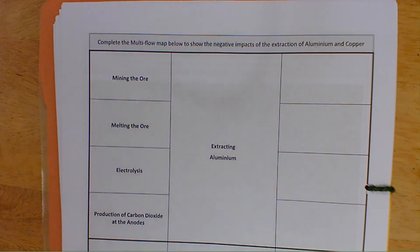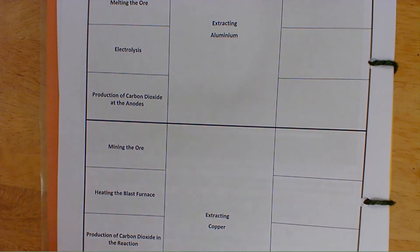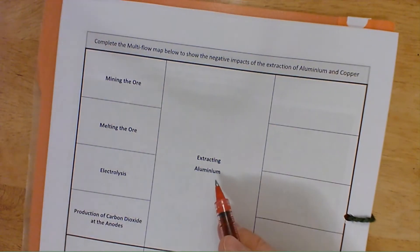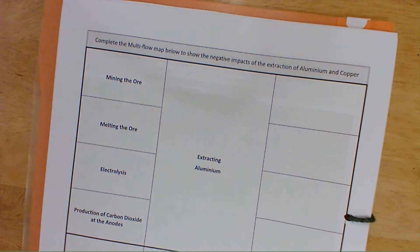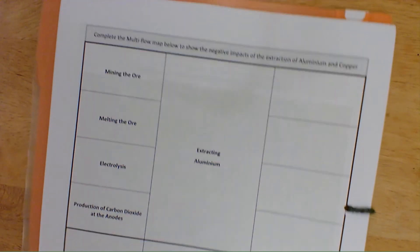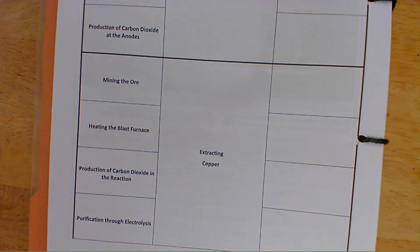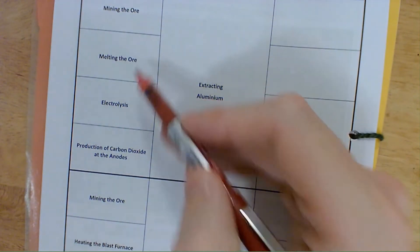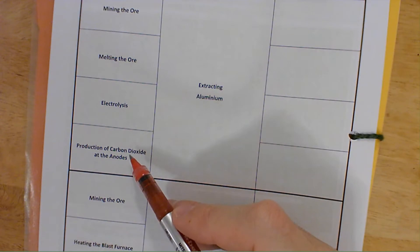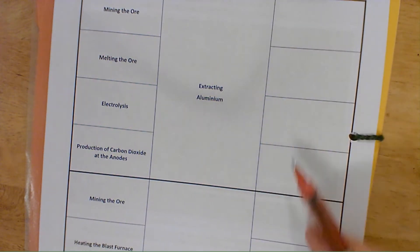Another thing we need to consider, other than the fact that these resources are finite and will run out, is the impact on the environment from extracting them. Two examples here: the extraction of aluminium from the ground in its ore form, then chemical extraction via molten electrolysis; and copper, extracted from the ground as ore, then chemically in the blast furnace. For each stage — mining the ore, melting the ore, the electrolysis, and the production of carbon dioxide at the anodes — what are the negative impacts on the environment?